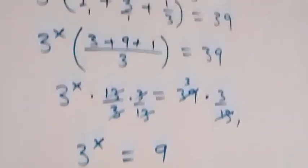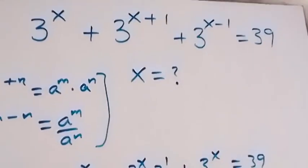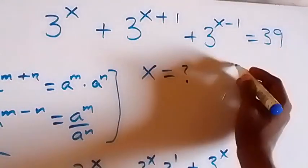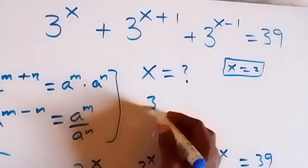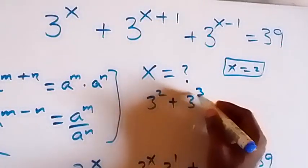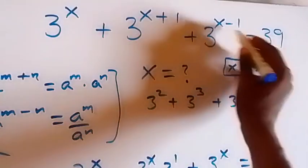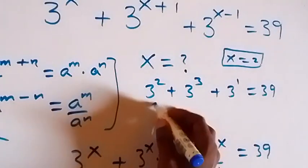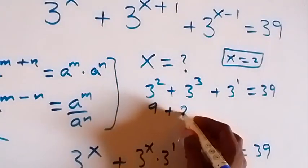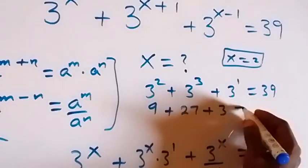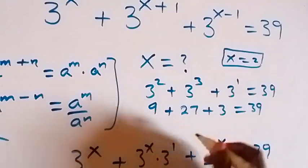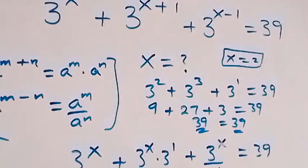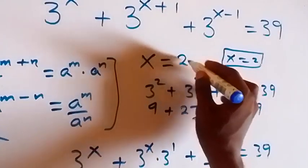Now let's check if this satisfies what we have. From the original equation — 3 raised to power x plus 3 raised to power x plus 1 plus 3 raised to power x minus 1 equals 39 — substituting x equals 2: 3 squared is 9, plus 3 cubed is 27, plus 3 raised to power 1 is 3. That gives 9 plus 27 plus 3, which equals 39. Left-hand side equals right-hand side, so x equals 2 satisfies the given problem.